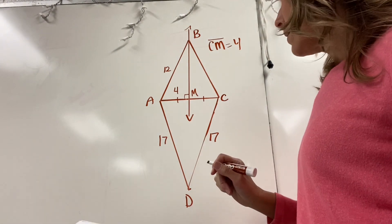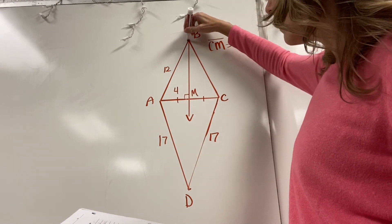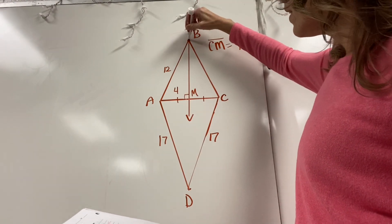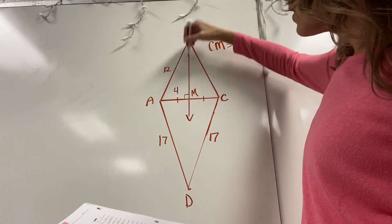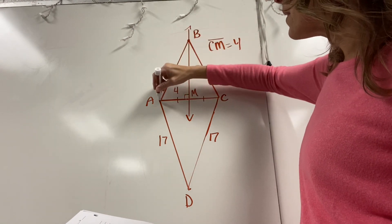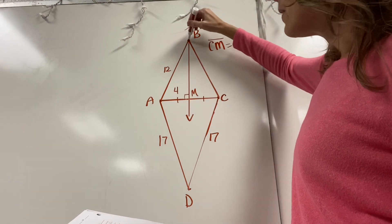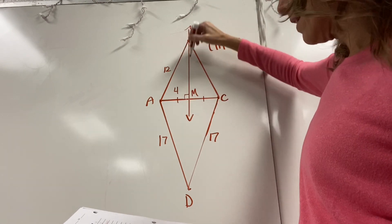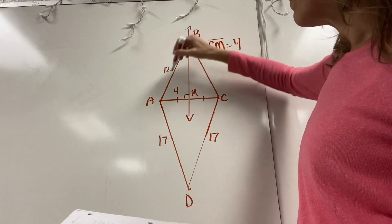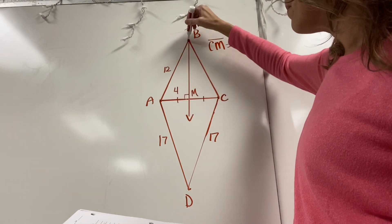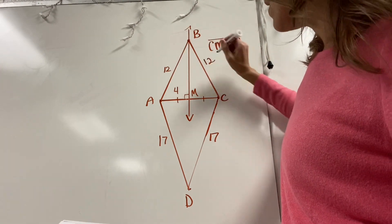It says that if a point — point B is the point we're looking at — if a point lies on the perpendicular bisector of a segment, then it is equidistant from the endpoints of that segment. We know it lies on the perpendicular bisector because this line is perpendicular and it bisects AC. So if AB is 12, then BC must also be 12.